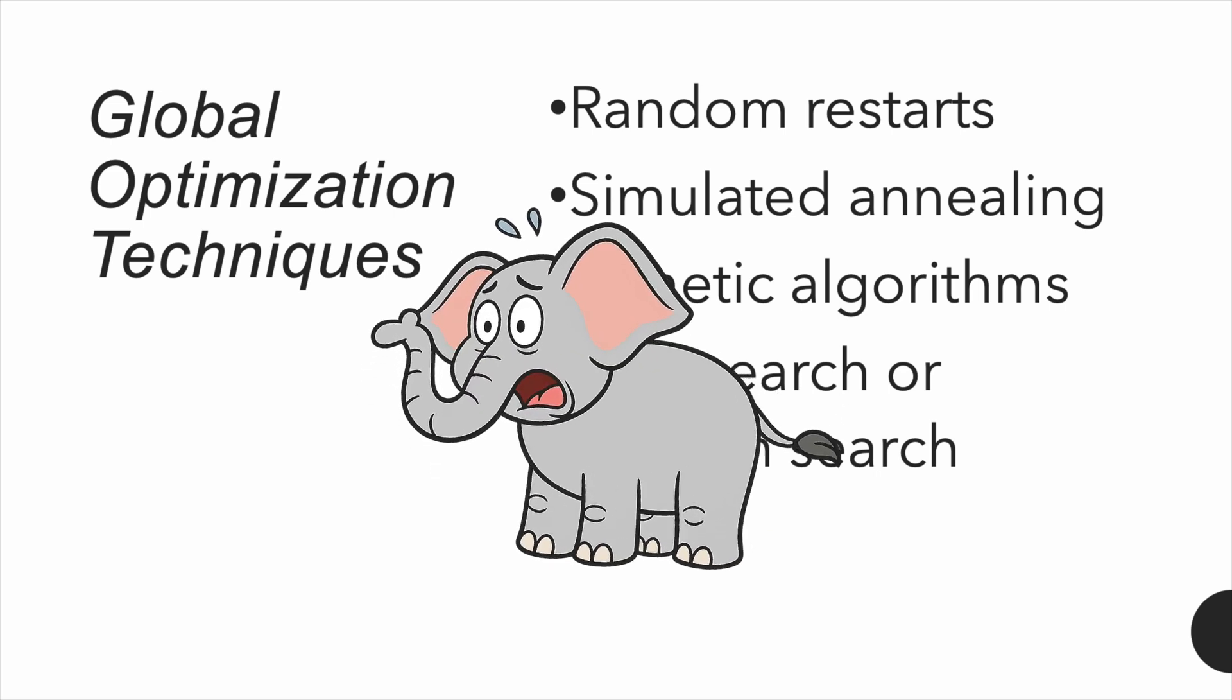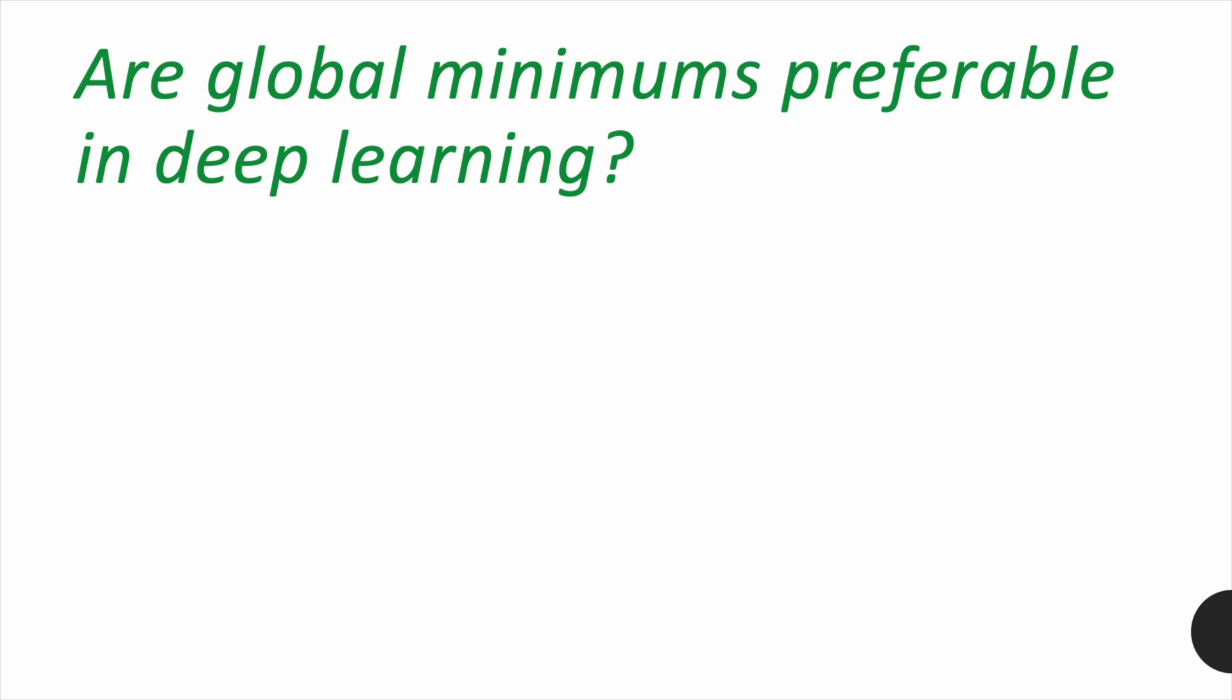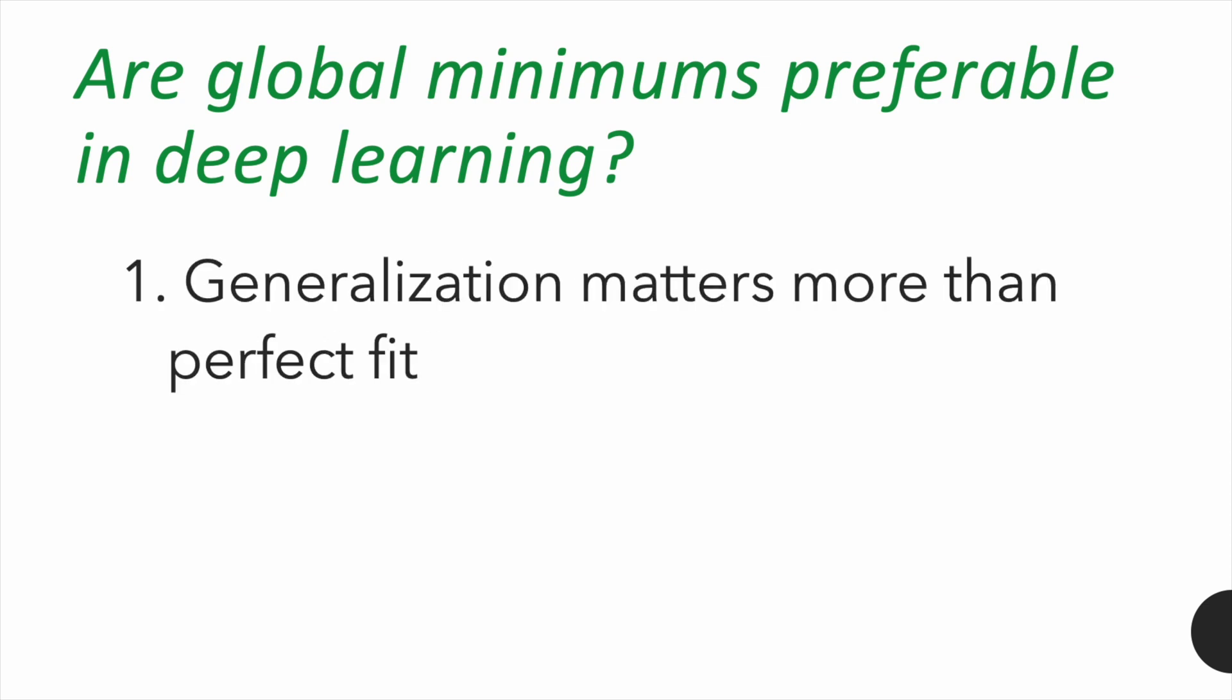Now the elephant in the room. Are global minimums better or more desirable in deep learning? The short answer is, not necessarily. In deep learning, our goal isn't just to get the lowest possible training loss. What we really care about is how well the model performs on unseen data. This is called generalization. Reaching the global minimum of the loss function means we've found the absolute best fit to the training data. But that often leads to overfitting, where the model memorizes the training data too well and fails to perform on new inputs.